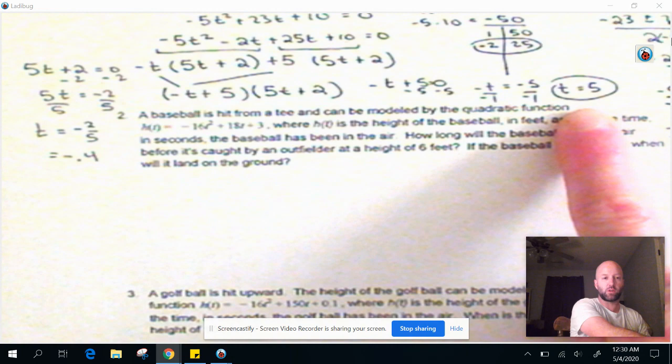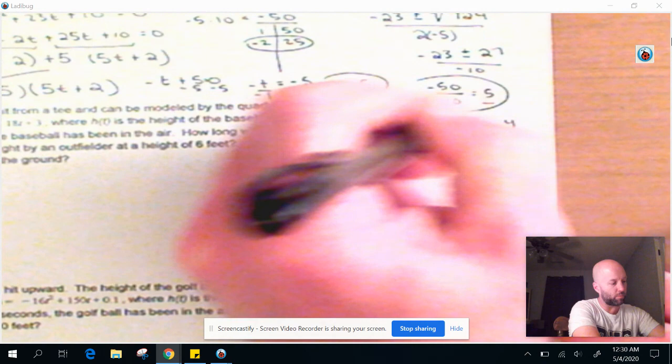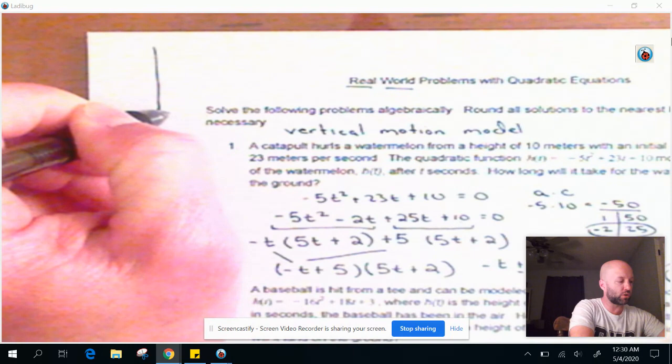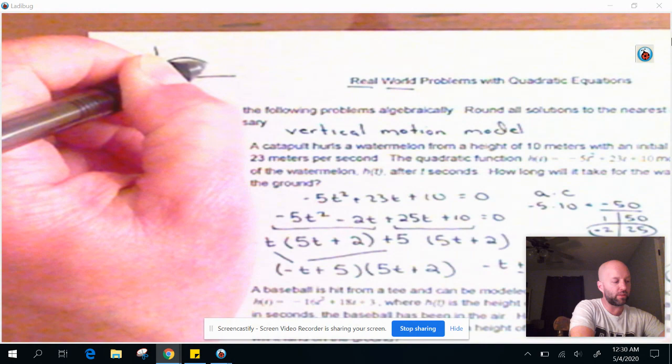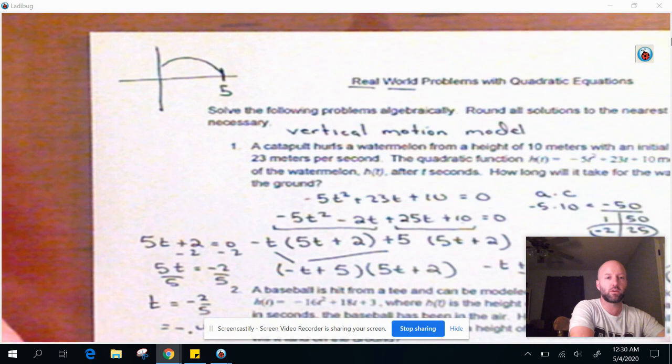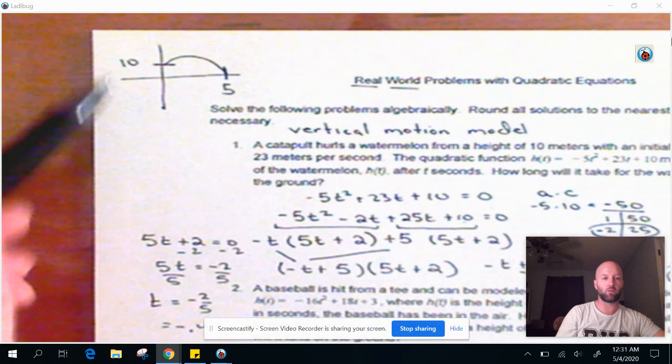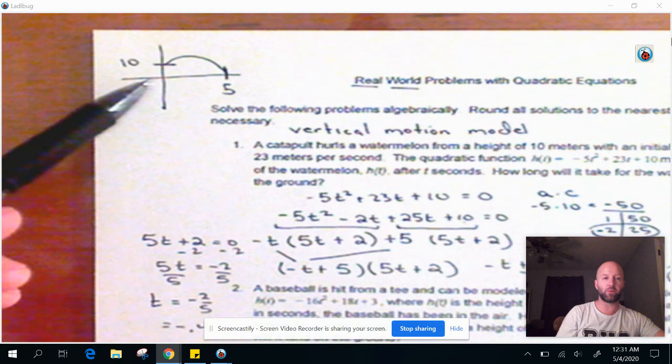But again, the only one that makes sense is this one because these are positive seconds. Remember, all of these real-world quadratic functions are going to be just the first quadrant, really. So shooting the watermelon or something from a certain height, and then it splats on the ground. This for us in this problem is 5 seconds. The initial height, which was given to us here, was 10. So just a reminder on the vertical motion model. It's really only the first quadrant because that's the only thing that makes sense. We don't do negative height, and we don't do negative time.